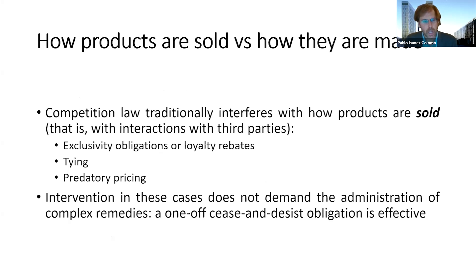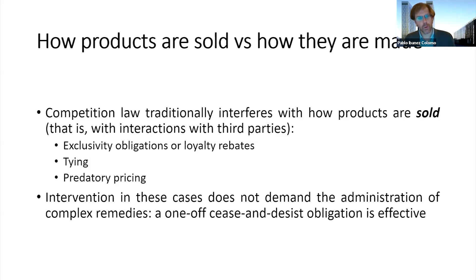I'd like to discuss the difference between how products are sold and how products are made. Competition law as traditionally understood, as applied over decades, was typically confined to the way in which products were sold. If one thinks of the traditional abuse of dominance categories — be it predatory pricing, exclusivity obligations, rebates, and so on — all of those cases interfered with the relationships of a dominant firm with third parties.